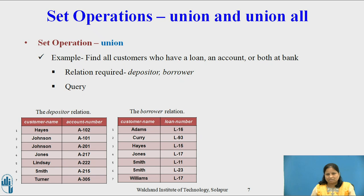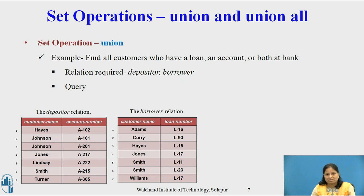For all set operations, we are going to consider two relations: Depositor, which denotes the association between the customer and the bank account that the customer has, and Borrower, which denotes the association between the customer and the bank loan that the customer has taken. The relation Depositor consists of two fields: customer name and account number, while the relation Borrower consists of customer name and loan number. For each example on set operation, we need to find the set of all customers who have an account at the bank and all customers who have a loan at the bank.